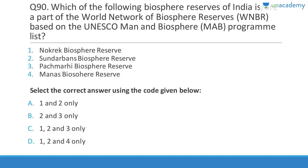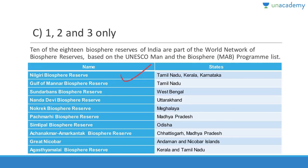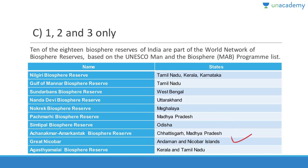Question 90: Which biosphere reserves of India are part of the World Network of Biosphere Reserves under UNESCO's Man and Biosphere Programme? Nokrek Biosphere Reserve, Sundarbans Biosphere Reserve, and Pachmarhi Biosphere Reserve are among the 10 of India's 18 biosphere reserves that are included. The 10 are: Nilgiri (TN/Kerala/Karnataka), Gulf of Mannar (TN), Sundarbans (West Bengal), Nanda Devi (Uttarakhand), Nokrek (Meghalaya), Pachmarhi (MP), Simlipal (Odisha), Achanakmar-Amarkantak (CG/MP), Great Nicobar (A&N Islands), and Agasthyamalai (Kerala/TN).